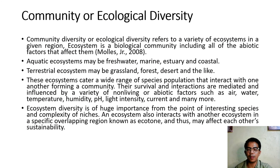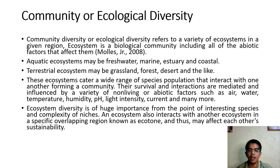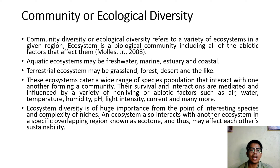The third component of biodiversity is community or ecological diversity. It refers to the variety of ecosystems in a given region. An ecosystem is a biological community including all abiotic factors that affect it. There are two major types of ecosystem: aquatic and terrestrial. Aquatic ecosystems may be freshwater like lakes and rivers, or marine like oceans, seas, estuaries, and coastal areas. Terrestrial ecosystems may be grassland, forests, desert, and the like.